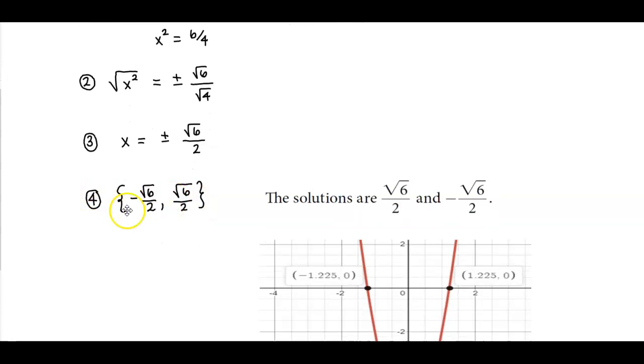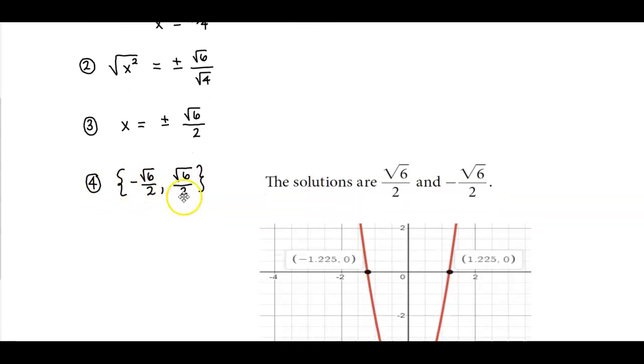So the two solutions are negative square root of 6 over 2 and positive square root of 6 over 2.